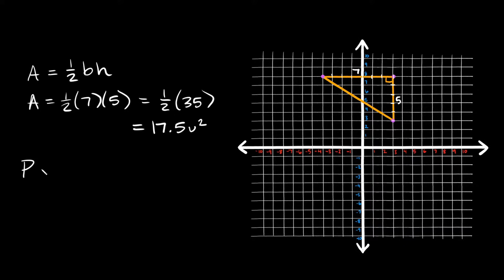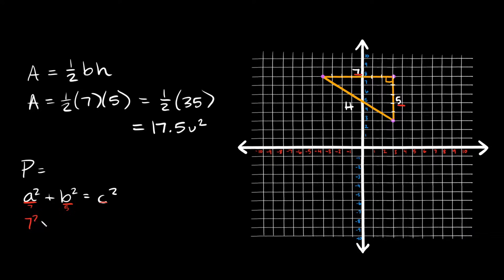Now in order to find the perimeter, we have to add up all the sides together. We already have these two sides, and we can use the Pythagorean theorem to figure out this missing hypotenuse. The formula is a squared plus b squared equals c squared, where a and b are your two shorter sides and c is your hypotenuse. So we can plug in a seven and a five — our shorter sides.